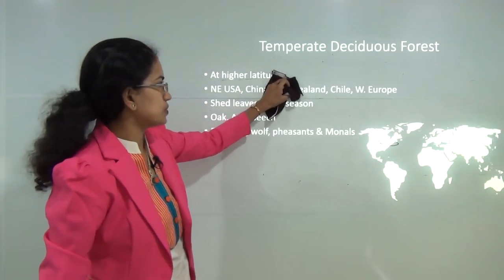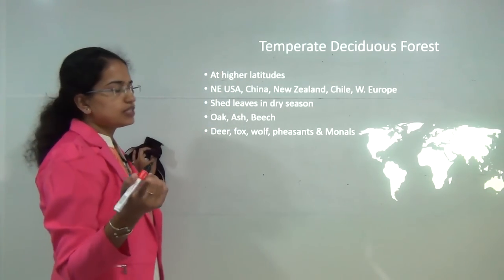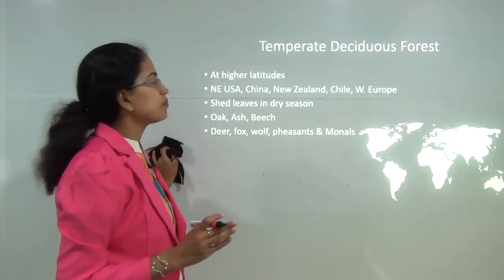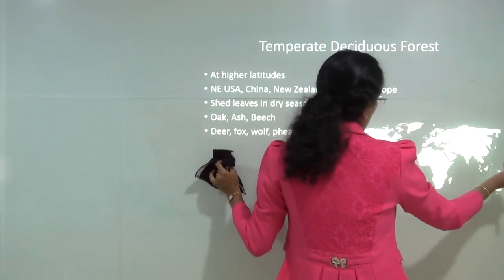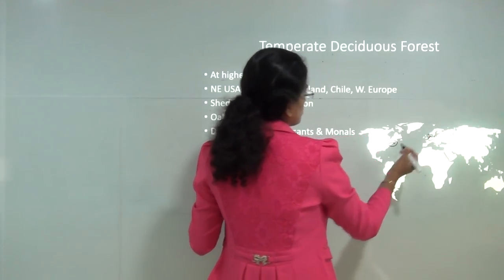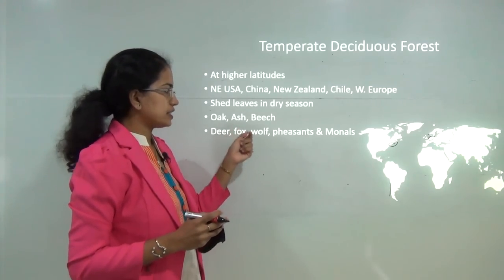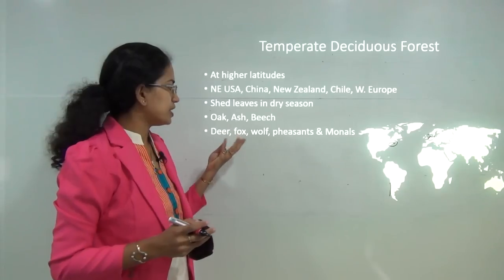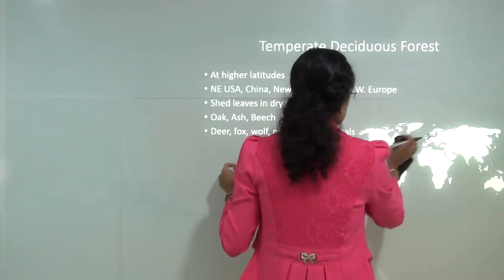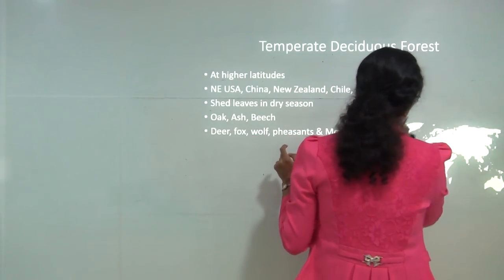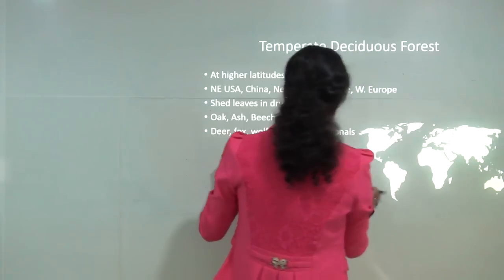The next is temperate deciduous forest. Again in the mid-latitudinal region, these forests are present, but deciduous — meaning all trees shed their leaves in one single season. They occur in the northeast margins of the United States, New Zealand, Chile and West Europe. Common trees are oak, ash and beech. Among wildlife you have deer, fox and wolf. Birds include pheasants and monals. In India, temperate deciduous forests occur in sections of the Himalayan region, where large populations of this wildlife are seen.